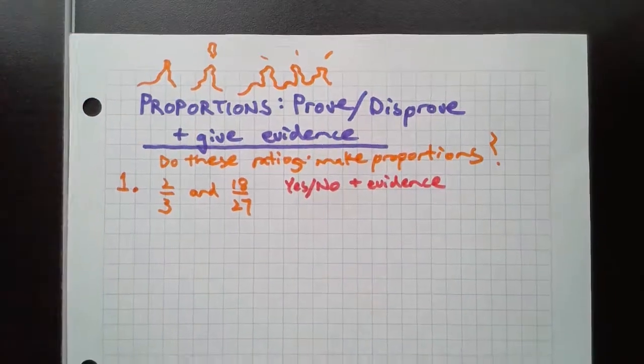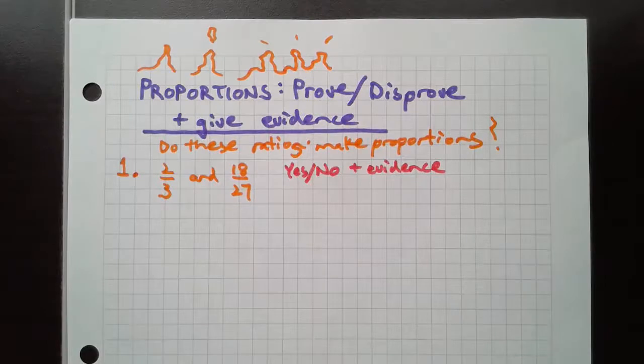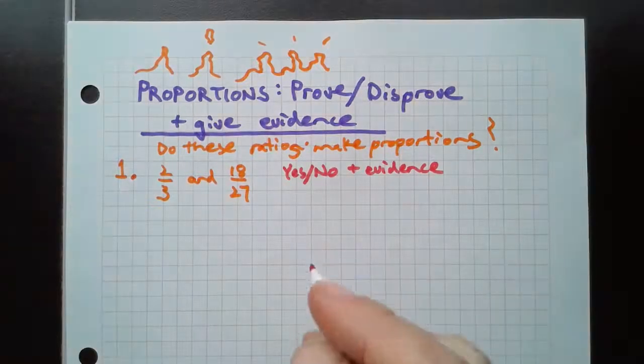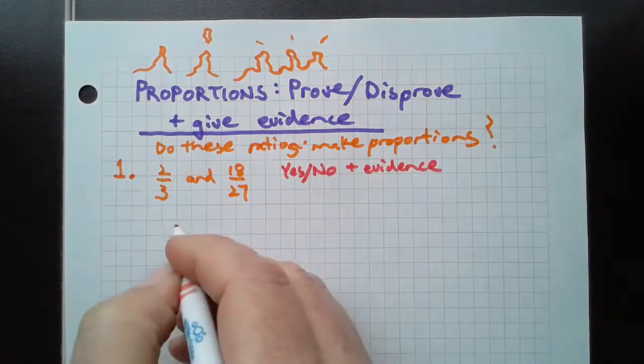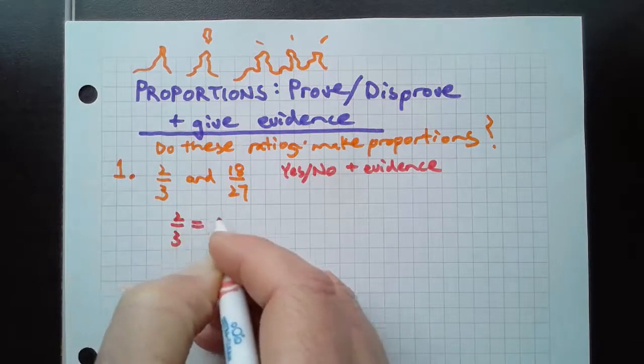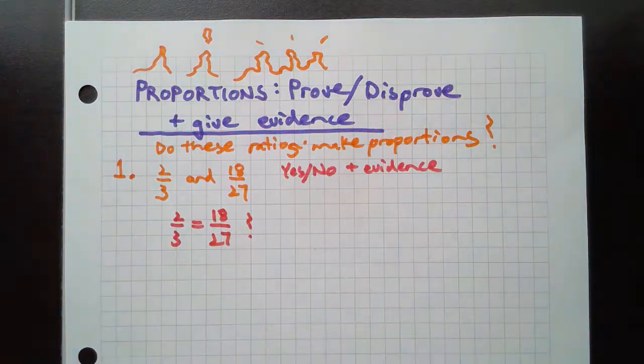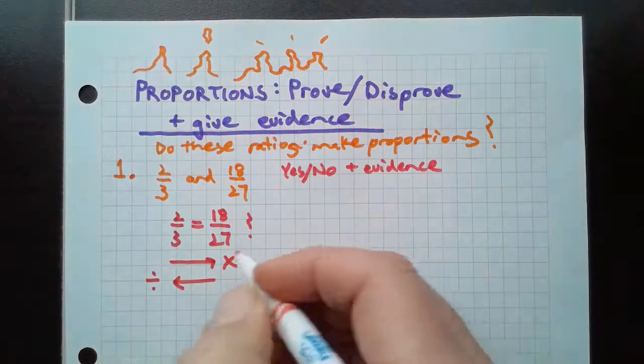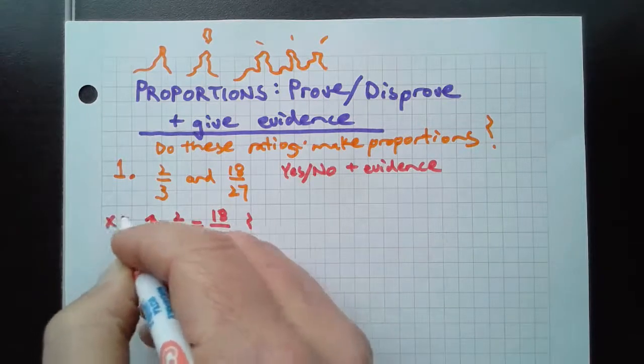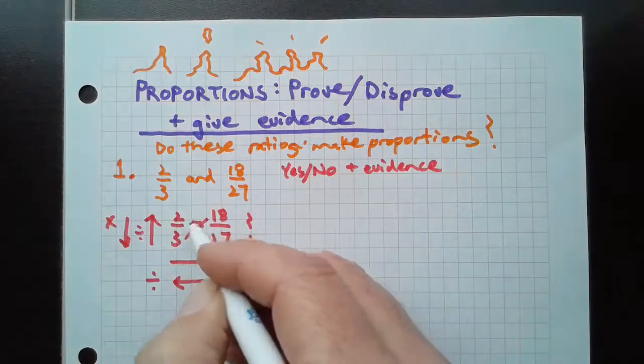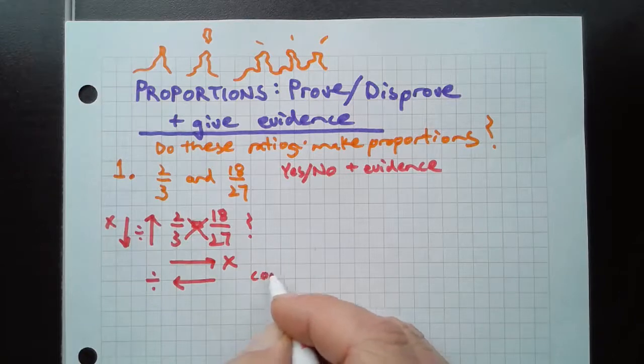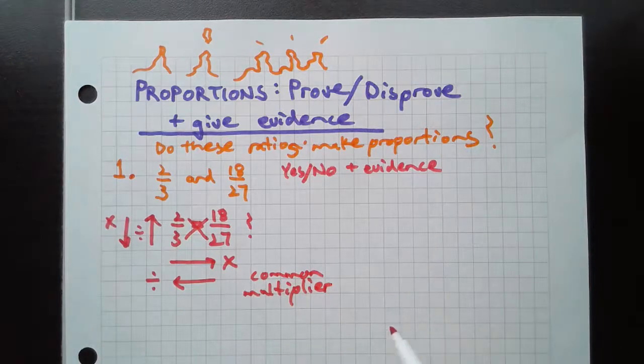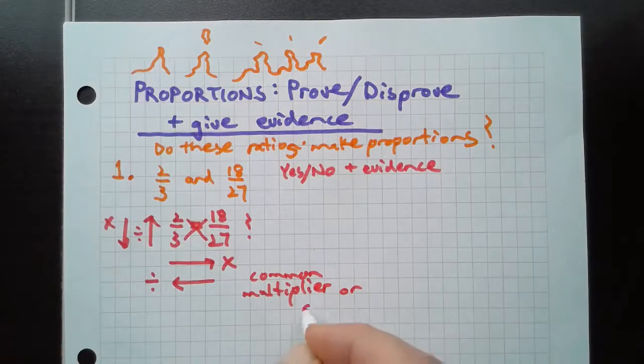Because you have a 50-50 chance, but do you want to end up with 50% of stuff right? In our previous video, we put an equal sign in the middle, which really means we're asking a question. We have so many strategies - we can look for a multiplier, a divisor, we can cross multiply. But the thing is, we want a common multiplier or divisor. What kind of evidence can you give?